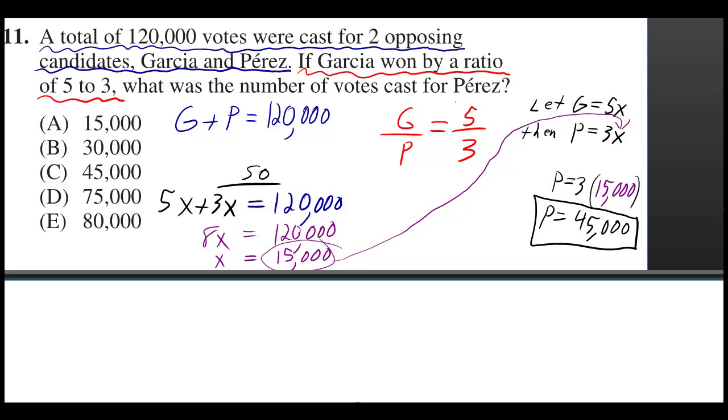I took the red phrase and made the red equation. If Garcia won by the ratio of 5 to 3, then I must be able to take Garcia's votes, divide them by Perez's, in other words make a ratio, and it must be equal to the ratio 5 over 3.